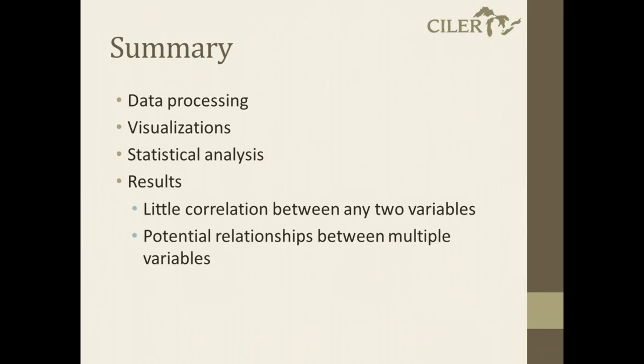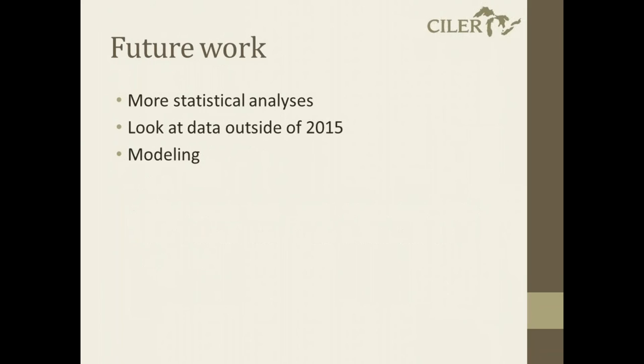So in summary, what I did here for the summer was to process a lot of data, develop visualizations for the data, run some statistical analysis on the data, and some preliminary results that we have so far. That little correlation between any two variables has been seen so far to help us determine fish distribution within the water column. But as we saw with the regression tree earlier, looking through a lot of these, there may be potential relationships between multiple variables acting on how fish distribution is determined. But that's something to be looked at more later.